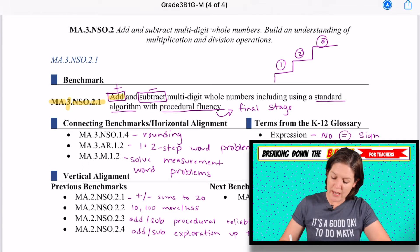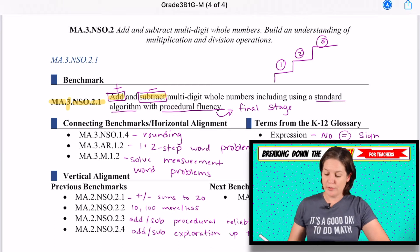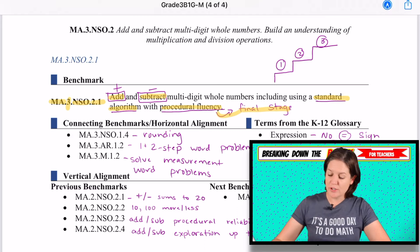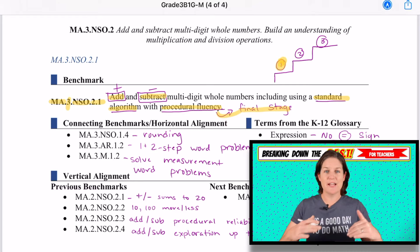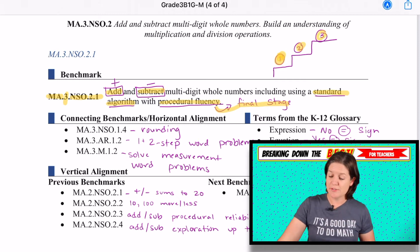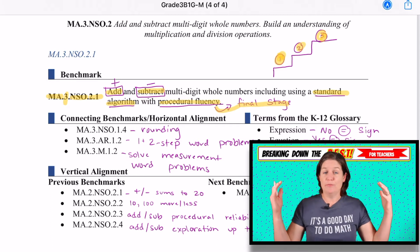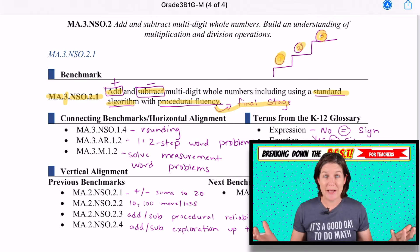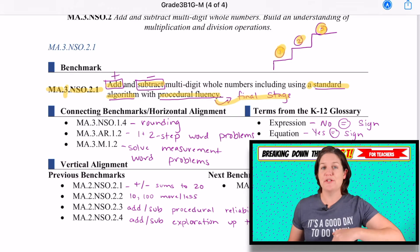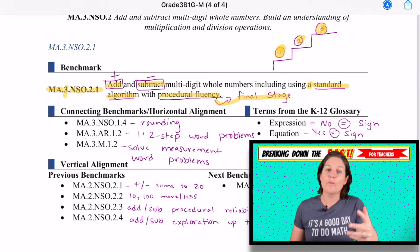All right, so this standard says to add and subtract multi-digit whole numbers, including using standard algorithm with procedural fluency. I made a note right here that this is the final stage. Really, students in previous years have started with the first stage. The first step is to explore adding and subtracting. And then in the second stage, maybe we're using place value blocks to explain. And then finally, in this third stage, we're using standard algorithm, which is really the regular way that most people know how to add and subtract. Now it does say a standard algorithm and we'll get into that. There's not one specific way. It is the one way that we could do it.